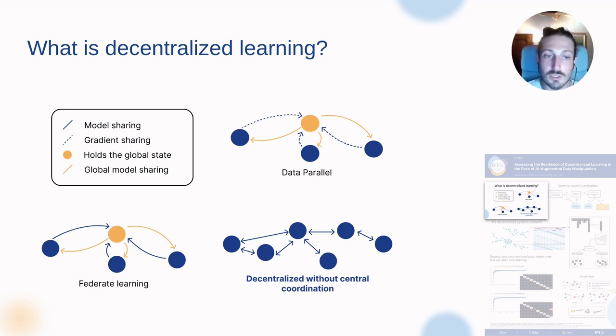Basically we share this global model, the local peers use the local dataset to update the model, to train the model for a few steps, and then they share it back to the central server, which manages to collect all the models, not the gradients, not the data, but the models trained by the peers, and blend them and merge them. We have some techniques, the most simple one is FedAvg, which basically tries to average the models.